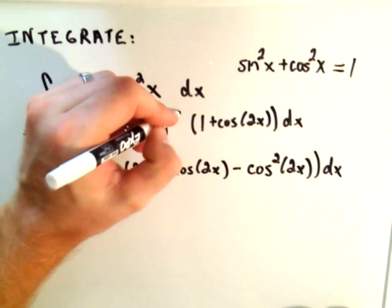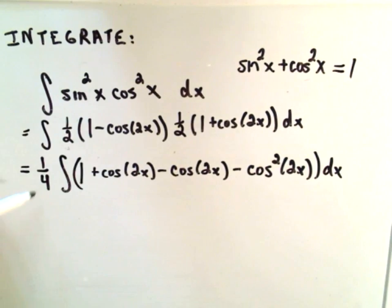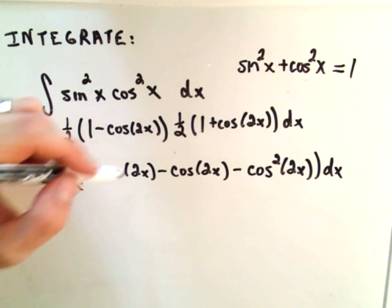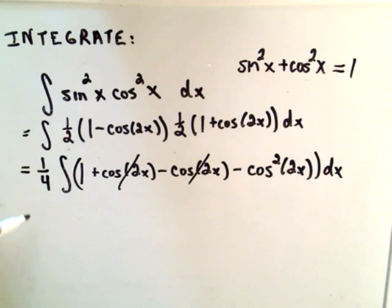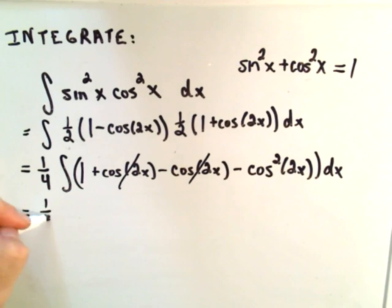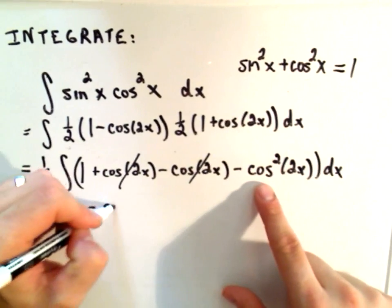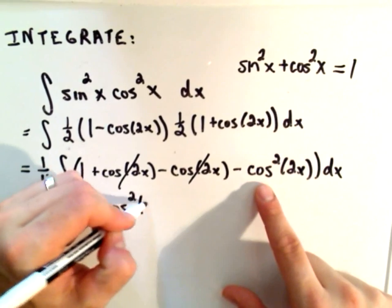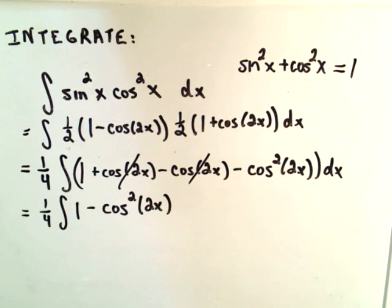Let me put those halves back in because I pulled them out as a fourth. The terms in the middle cancel out. We're left with one-fourth, we've got one, and lo and behold, another cosine squared of 2x term.